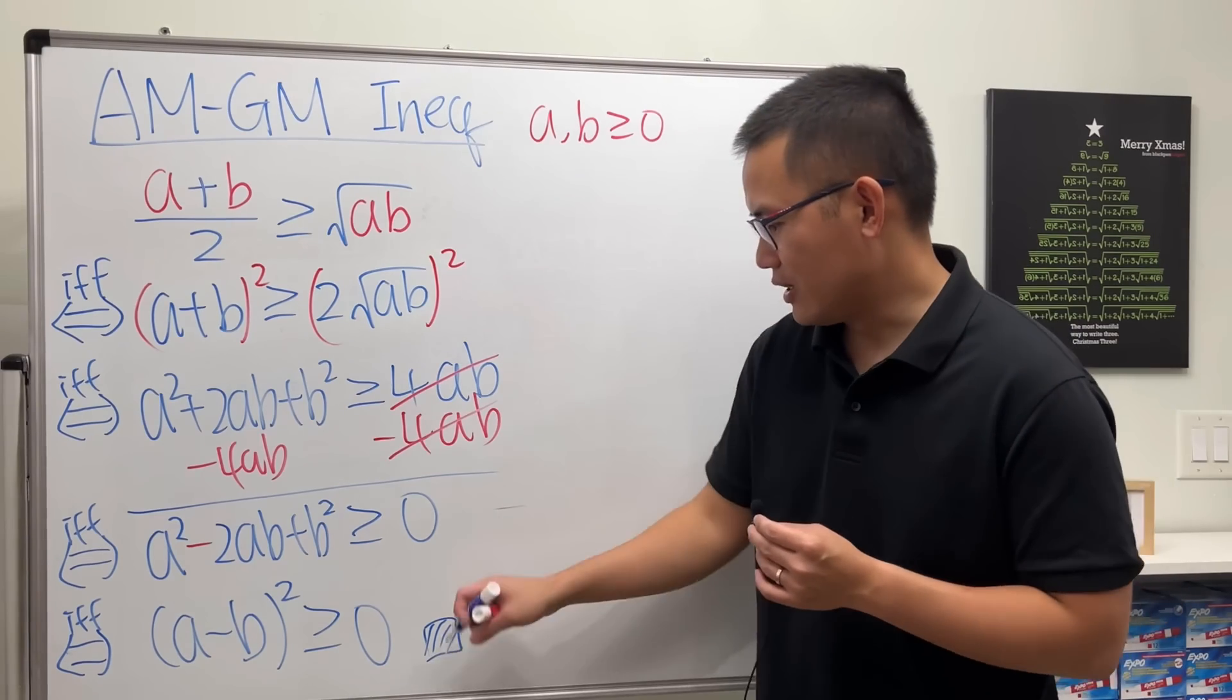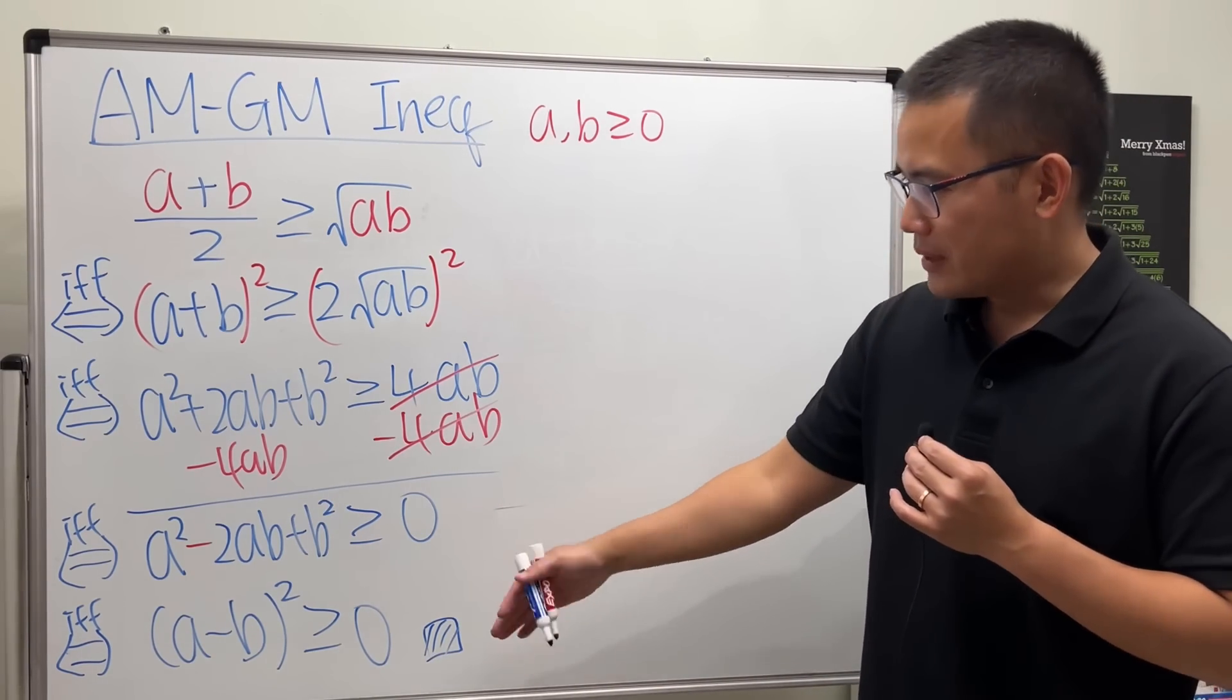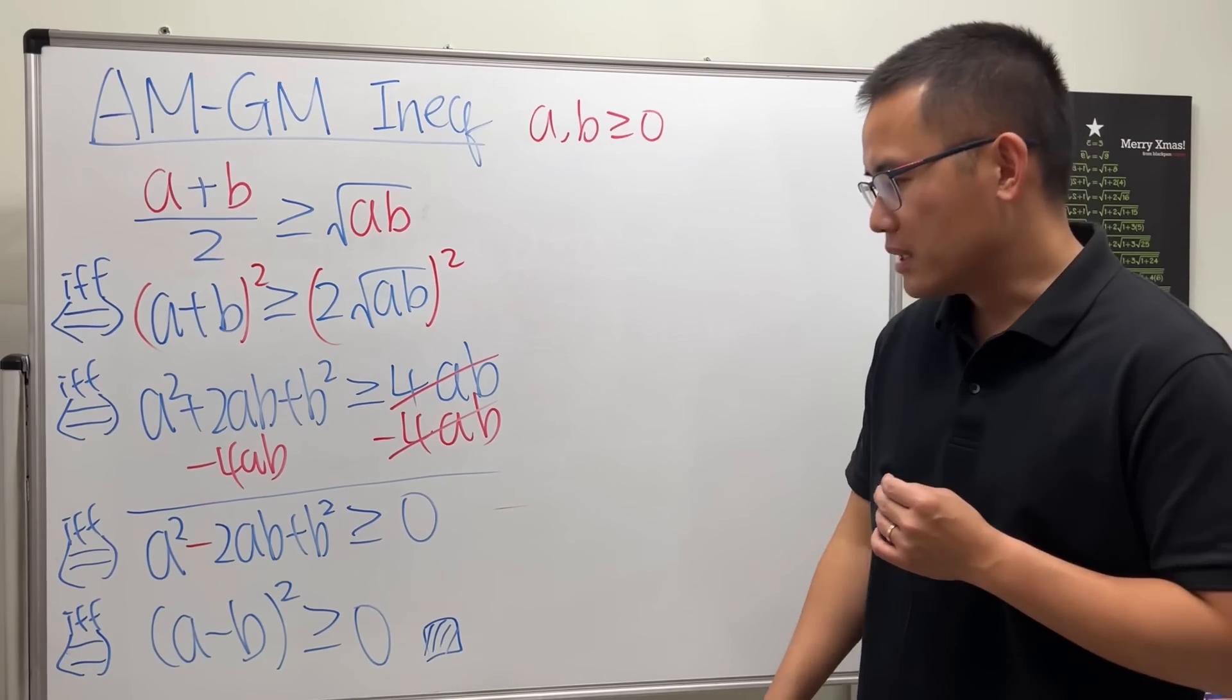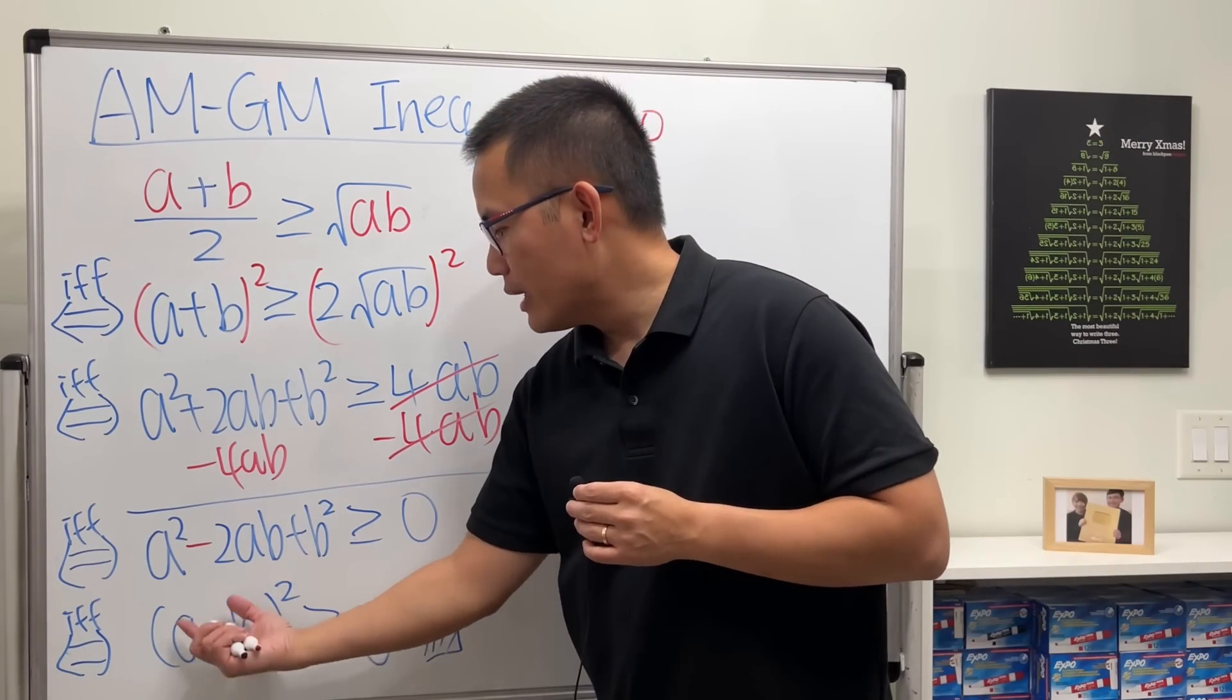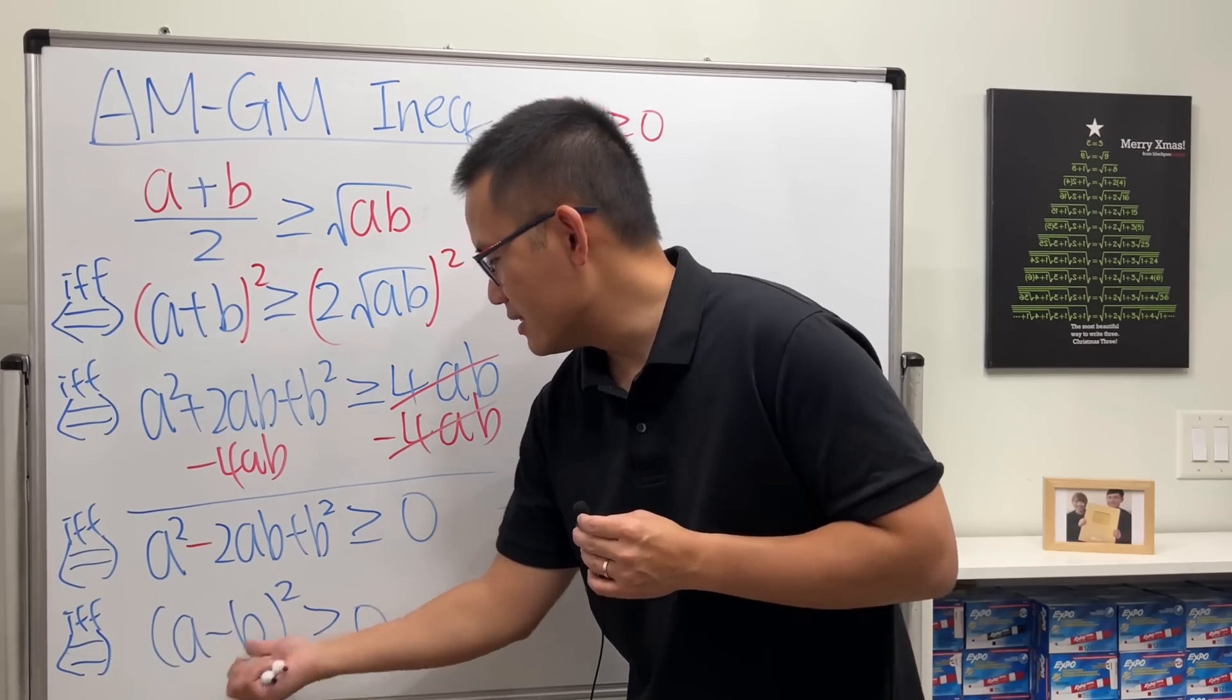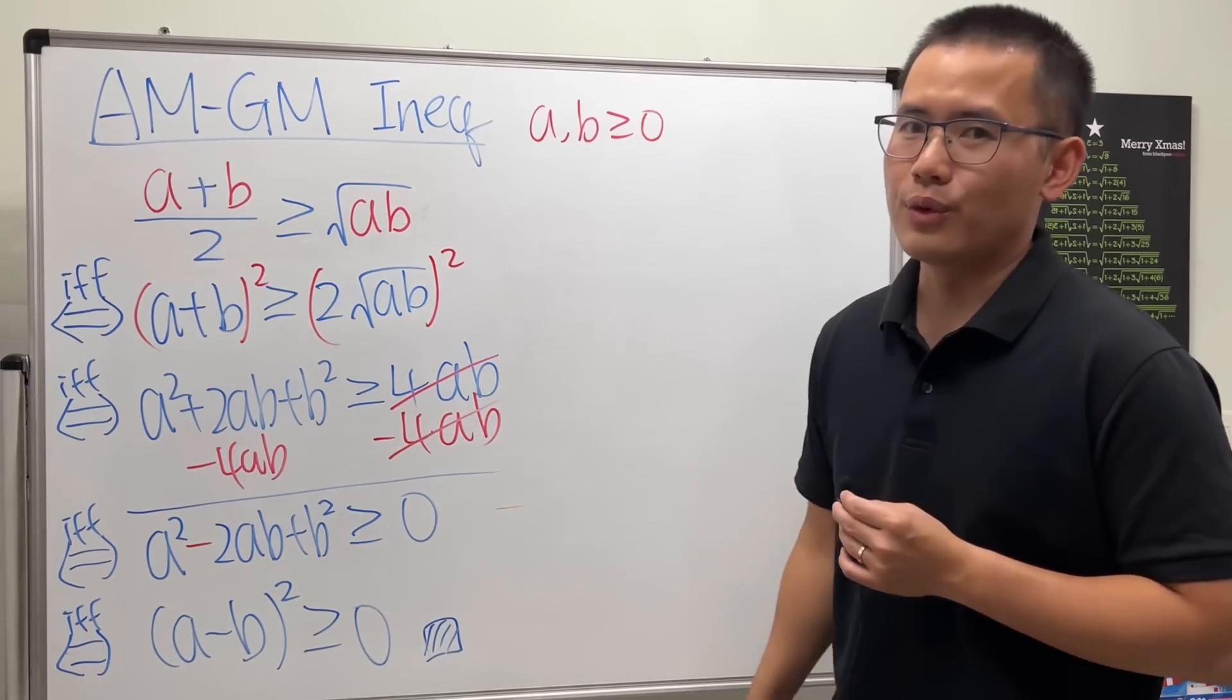In fact, we are done. So we can draw a box and shade it in to symbolically represent that we are done with the proof. Because on the left-hand side we have a square, and the square can never be negative, so we are saying this is non-negative, which is of course true.